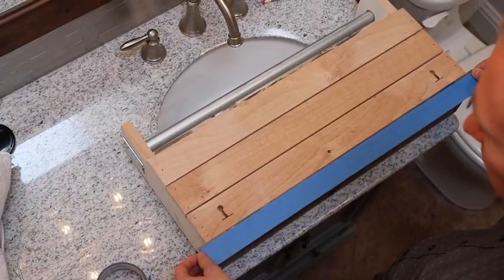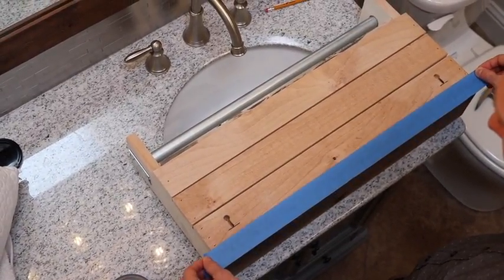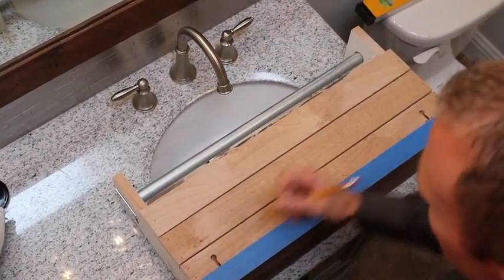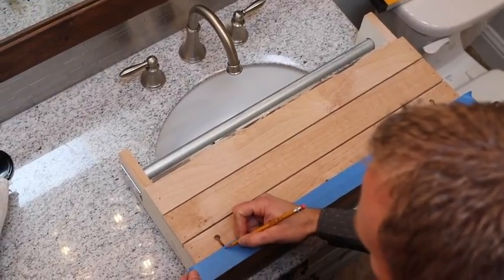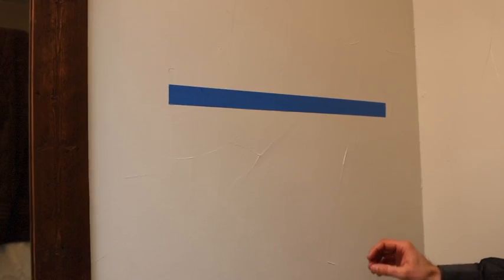It doesn't have to be down to the fraction of an inch, but the entire length of the item. And then line the bottom edge of the tape up with those keyhole slots, take a pencil, and just put a little mark right there in the middle of the keyhole slot.